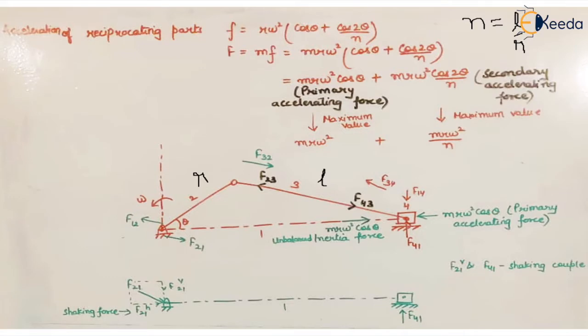To understand the balancing of reciprocating parts, we have taken the case of a single slider crank mechanism. This mechanism has four parts: the frame or cylinder (link 1), the crank (link 2), the connecting rod (link 3), and the reciprocating piston (link 4). The frame should be stationary, the crank should have purely rotational motion, the piston should have purely translational or reciprocating motion, and the connecting rod — which has a combination of reciprocating and rotating motion — is converted to a dynamically equivalent system for analysis.